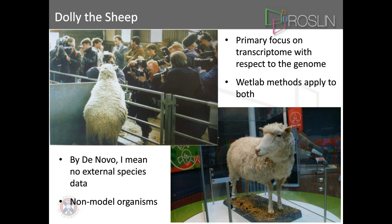By 'de novo' in my title, what I really meant was creating a transcriptome annotation without information from external species. I know this is a little bit confusing because typically de novo transcriptome annotation refers to a transcriptome without information on the genome, but primarily I'll be focused on a transcriptome with respect to the genome. However, the wet lab methods I'll be talking about really apply to both.